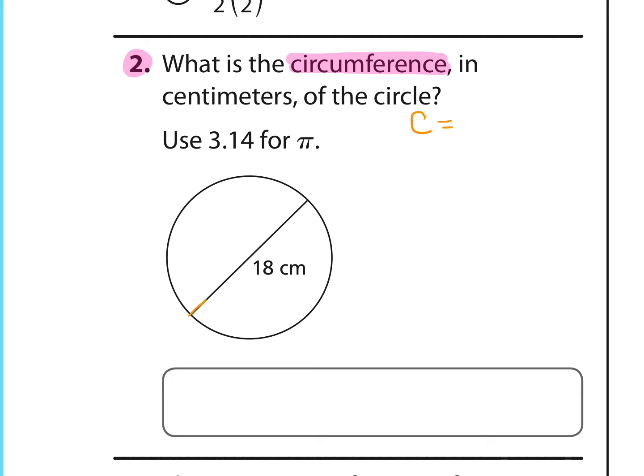Since it's given me the distance all the way across, that is the diameter of a circle, then I'm going to use C equals π D. We've got 3.14 for π times the diameter is 18. When we multiply, we get 56.52, and that is a distance measured in centimeters.